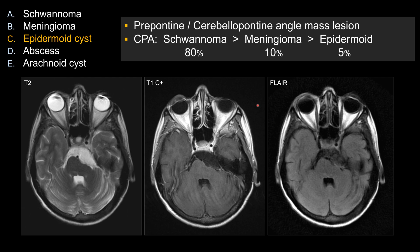When thinking about CPA mass lesions in general, statistically speaking, the top three choices are schwannoma — specifically vestibular schwannoma, which accounts for about 80% — followed by meningioma at about 10%, with epidermal cysts as the distant third. So the top three are vestibular schwannoma, meningioma, and epidermal cysts.